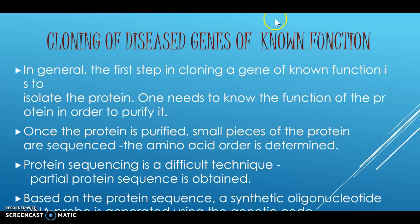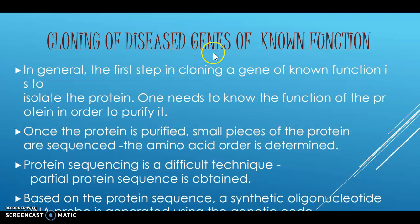Examples of genes of known function that have been cloned include phenylalanine hydroxylase — in the case of phenylketonuria, the gene for phenylalanine hydroxylase enzyme is cloned. Hexosaminidase A — in the case of Tay-Sachs disease, hexosaminidase A is cloned. And biotinidase — in the case of biotinidase deficiency, the biotinidase enzyme is cloned.